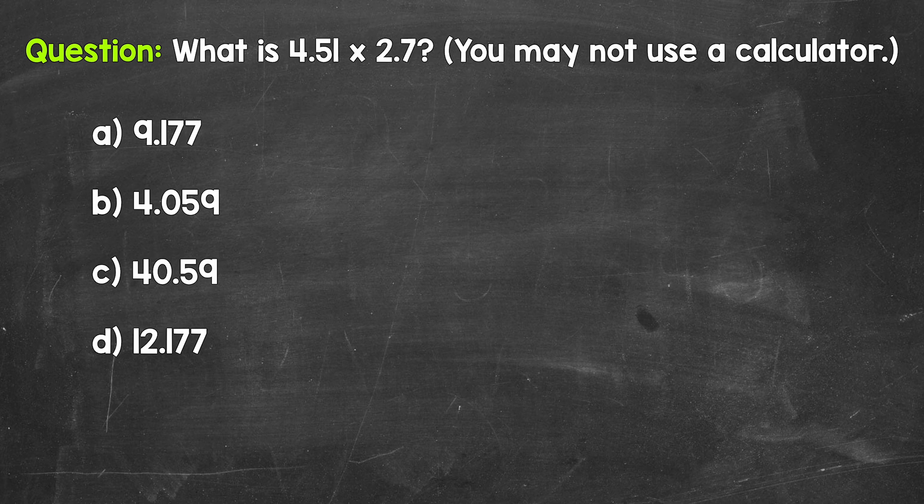Now here, we have a multiplication problem involving decimals. And whenever we have a multiplication problem involving decimals, the first thing that we can do is remove any of the decimals. So let's rewrite this as 451 times 27. And once we remove any decimals, we multiply.